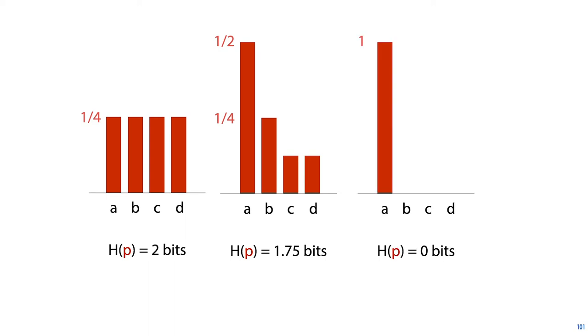In the extreme case, where one outcome has probability 1 and the other outcomes have probability 0, then we can transmit the outcome in 0 bits. If I want to tell you what the outcome from this distribution was, I don't need to tell you anything, because we were already certain what was going to happen. In this way, we can see that the higher the entropy of a distribution, the more uncertainty we have over its outcome.